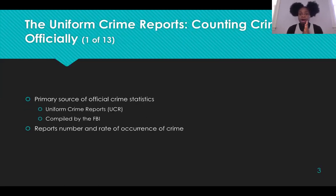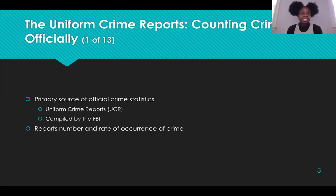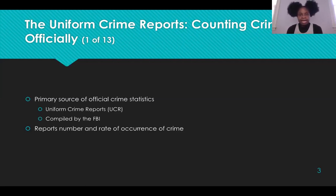The Uniform Crime Reports are reports that count crime officially. They are a primary source of official crime statistics in the United States, collected and reported on annually. They are compiled specifically by the Federal Bureau of Investigation — the FBI. The UCR reports crimes known to the nation's police and sheriff departments, and the number of arrests made by those specific agencies.